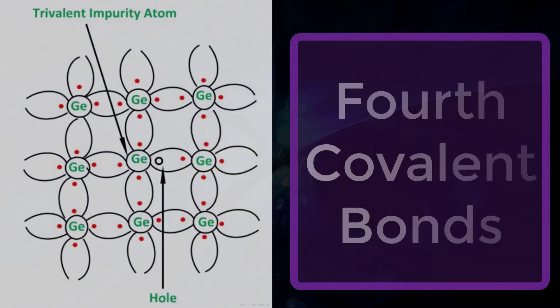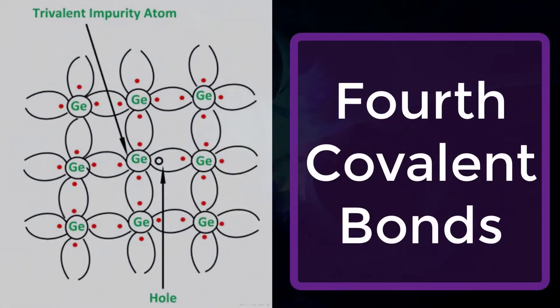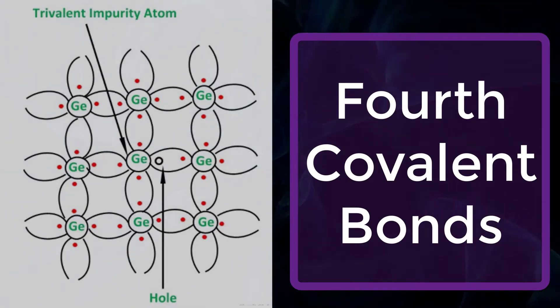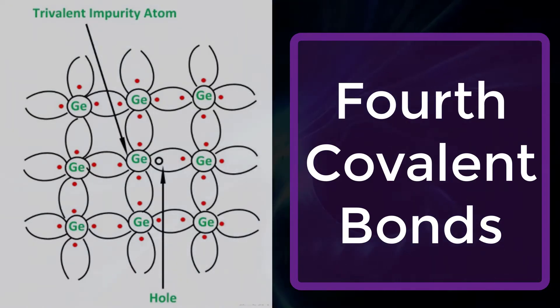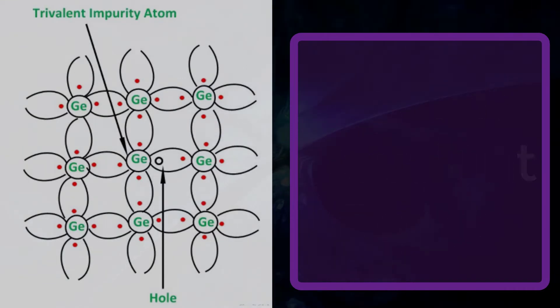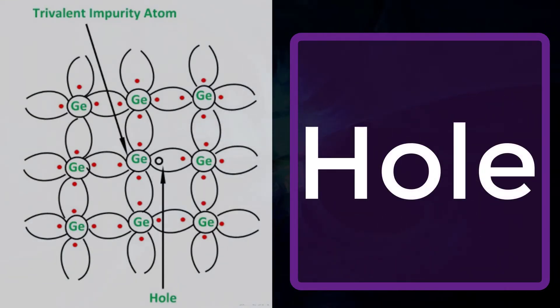In the fourth covalent bond, only the germanium atom contributes one valence electron, while gallium atoms have no valence bonds. Hence, the fourth covalent bond is incomplete, having one electron short. This missing electron is known as a hole.